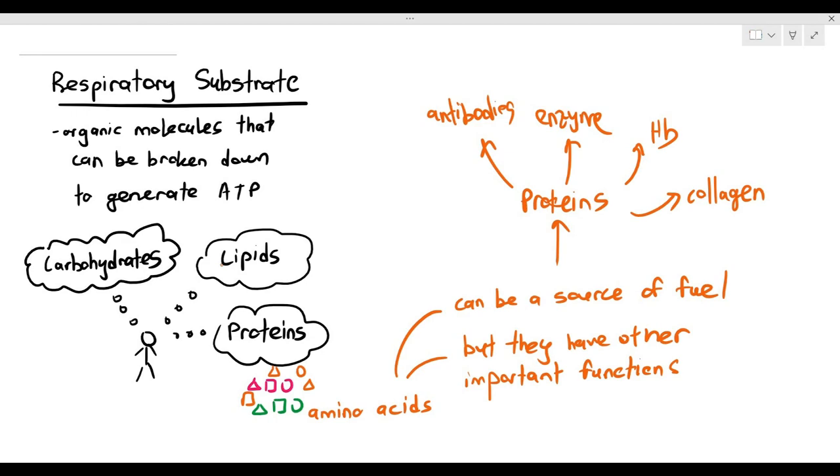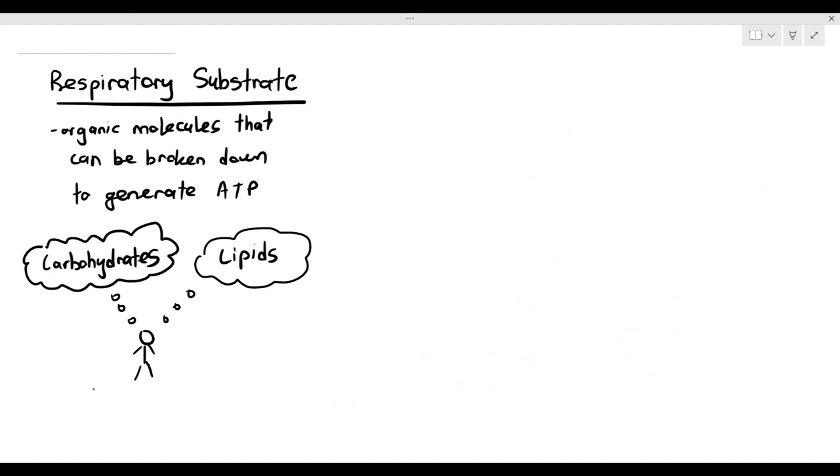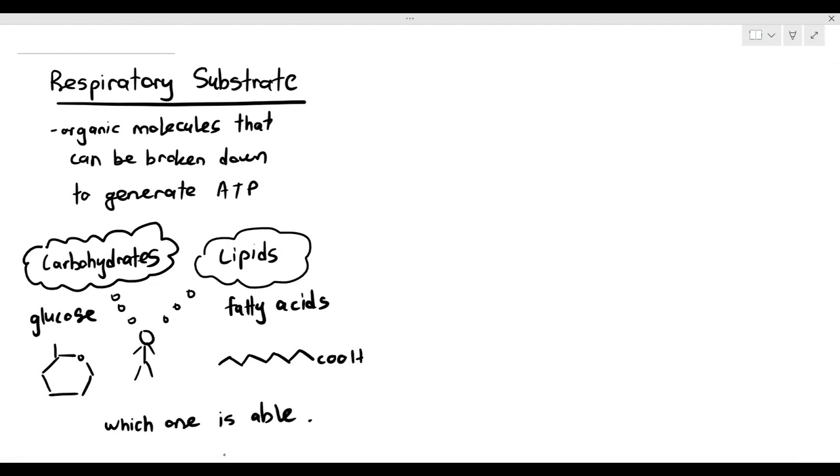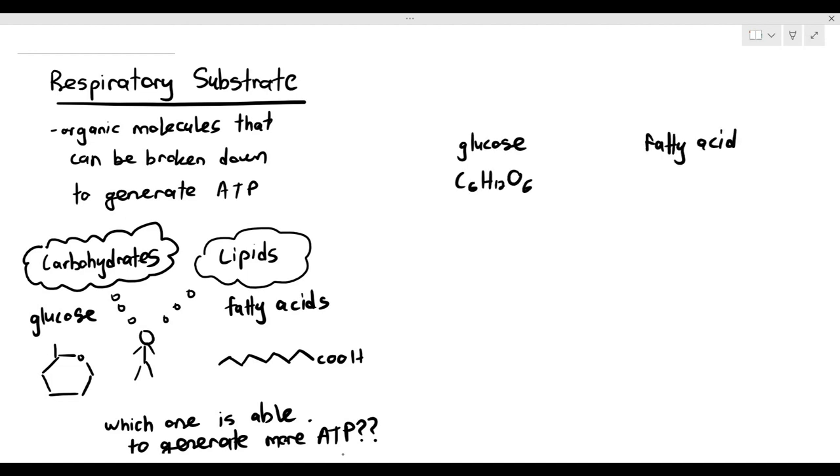The question is between carbohydrates and lipids. Examples of carbohydrates: glucose. An example of lipid: fatty acid. You can see one molecule of glucose and a molecule of fatty acid. Which one is able to generate more ATP when broken down? Let's look at the chemical formula for the two. Glucose is C6H12O6. The fatty acid I'm showing you here is an example - this particular fatty acid has C18H34O2.